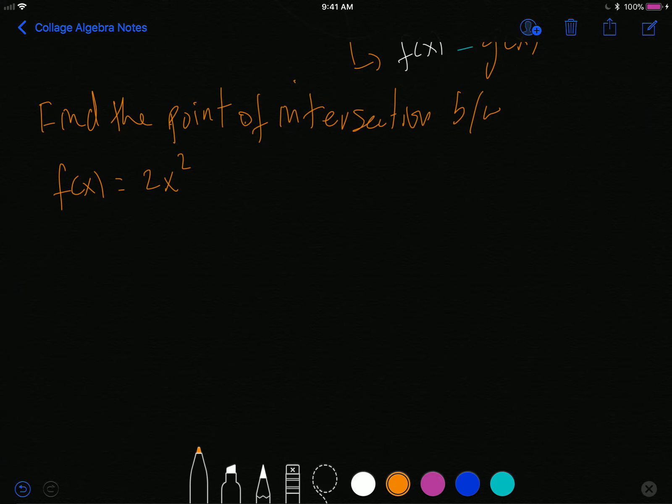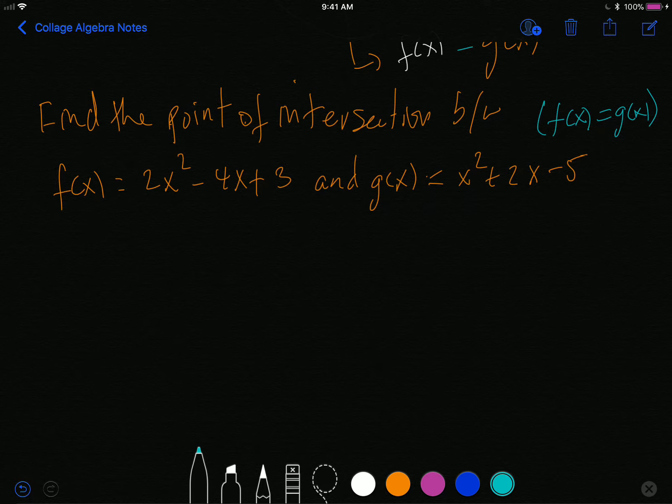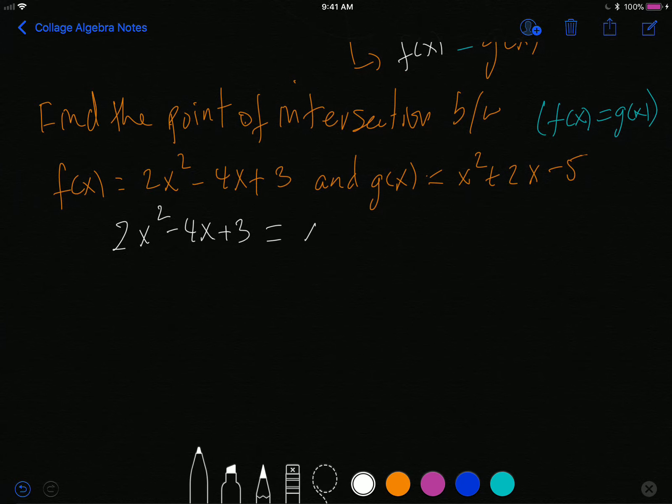Let's find a point of intersection between f, which is 2x squared minus 4x plus 3, and g, which is x squared plus 2x minus 5. Again, to find the point of intersection, all I have to do is make f equal to g, and when that happens, I just set the bodies of each equation equal to each other, and that will be effectively setting them equal to each other. And so I will go 2x squared minus 4x plus 3 must be the same as x squared plus 2x minus 5.